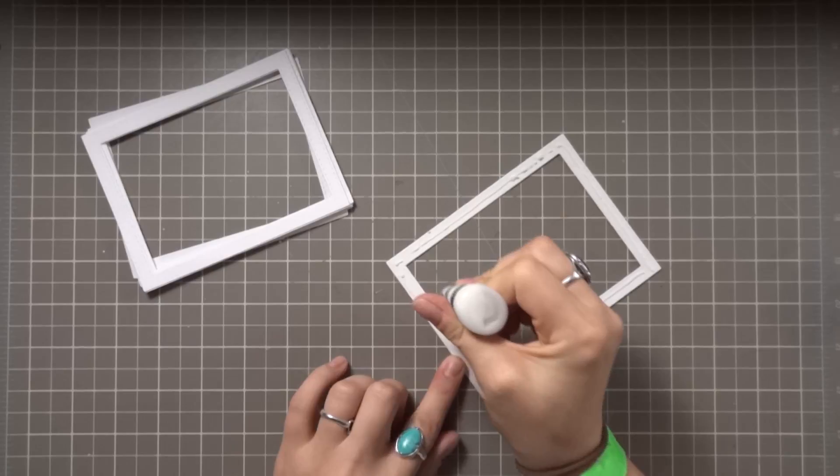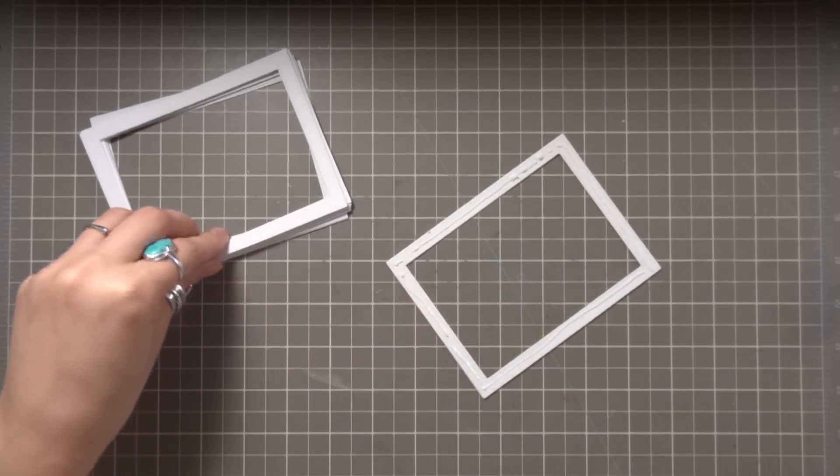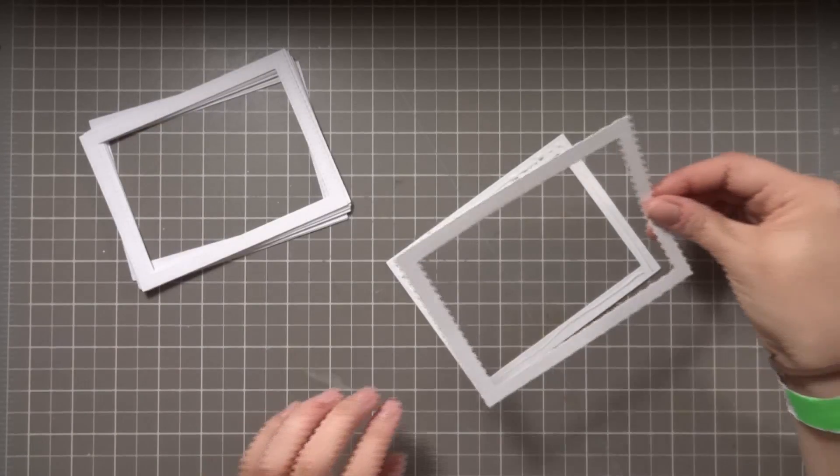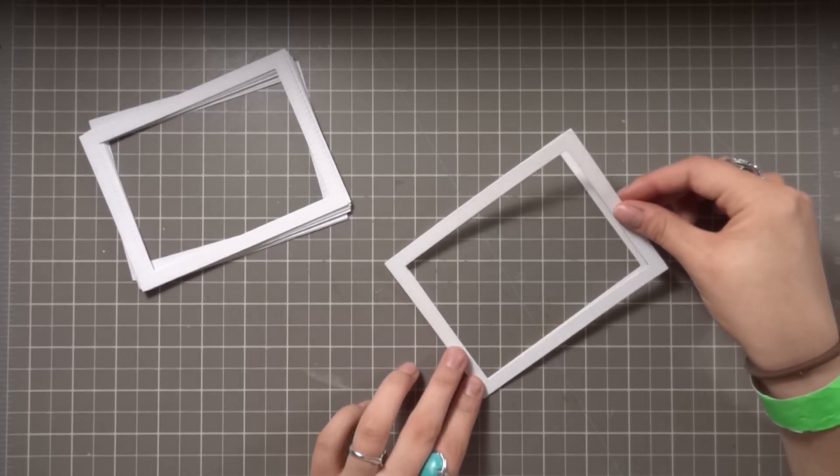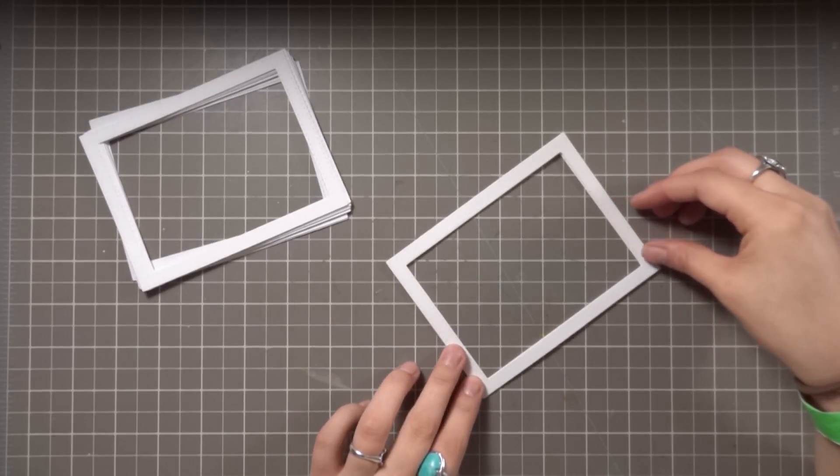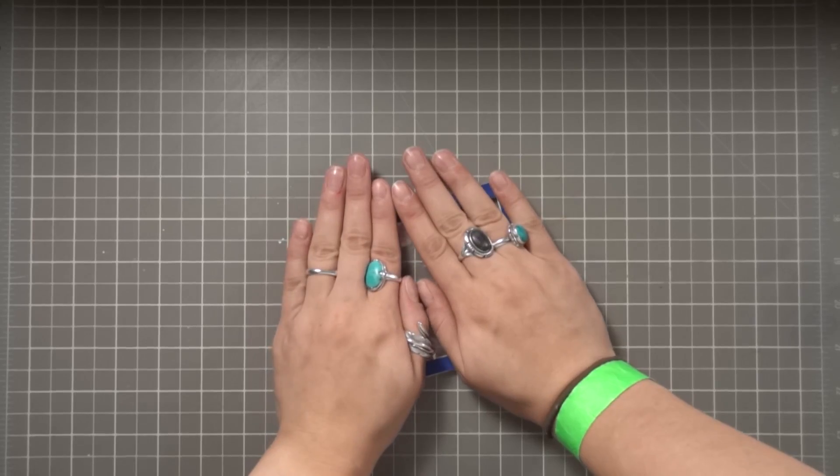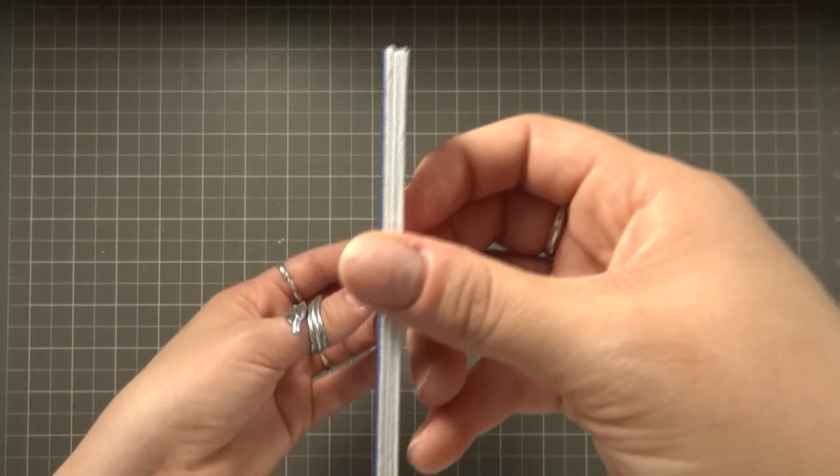I'm now using my multi matte medium and adhering about 10 or so borders together, creating the dimensional pocket for the shaker. Once those are all set, I'm adhering on the top border and acetate piece, and here you can see the nice dimension you get from all the borders.